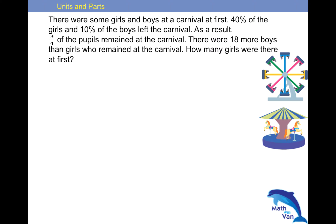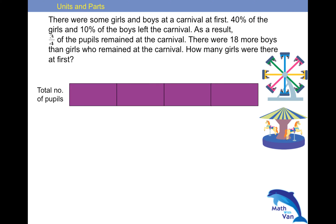Start off with drawing a model for the total number of pupils. We are told that 3 quarters of the pupils remain at the carnival. So I will use 4 parts to represent the total number of pupils since 3 quarters remain. So 1 quarter left.